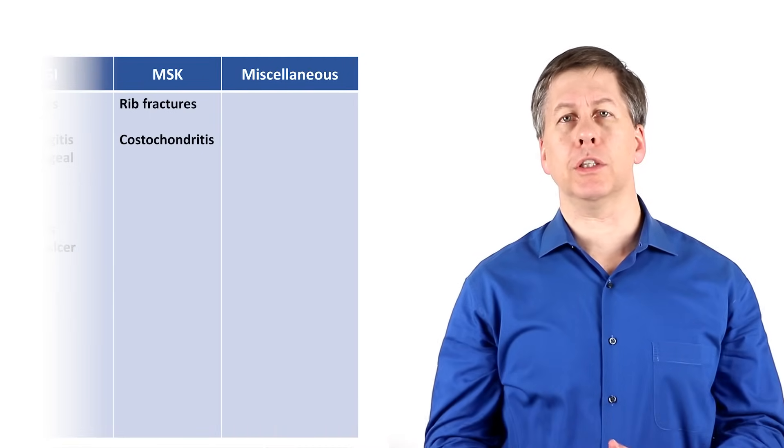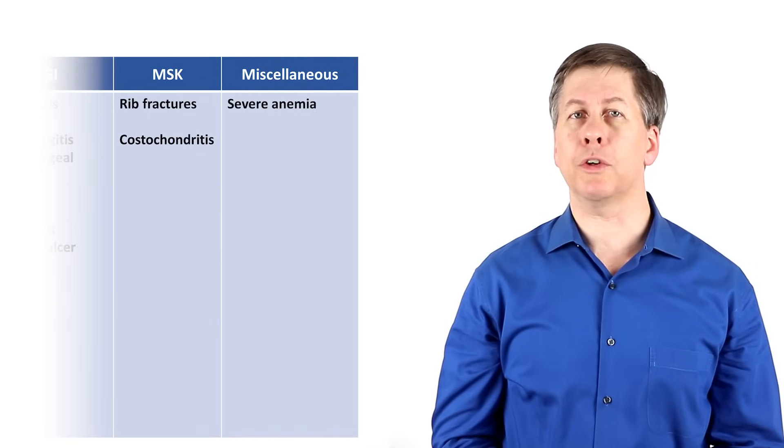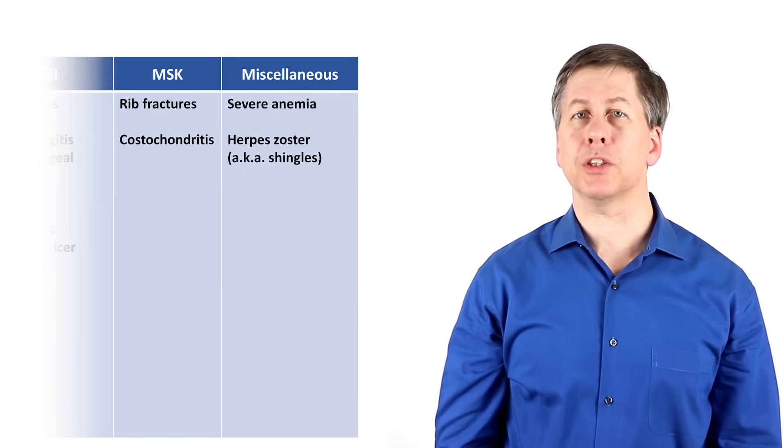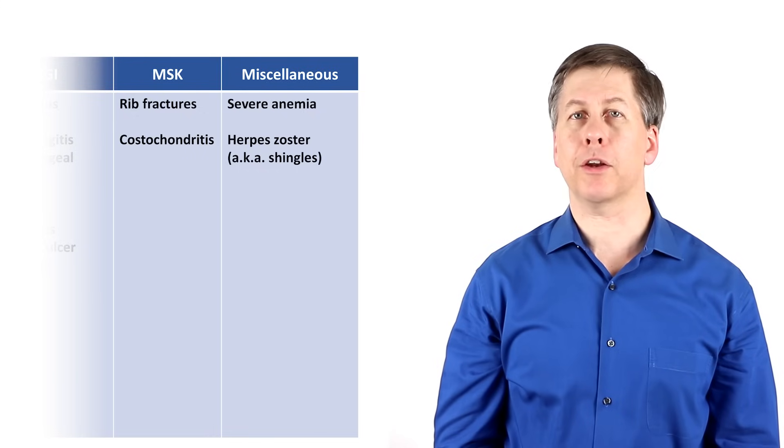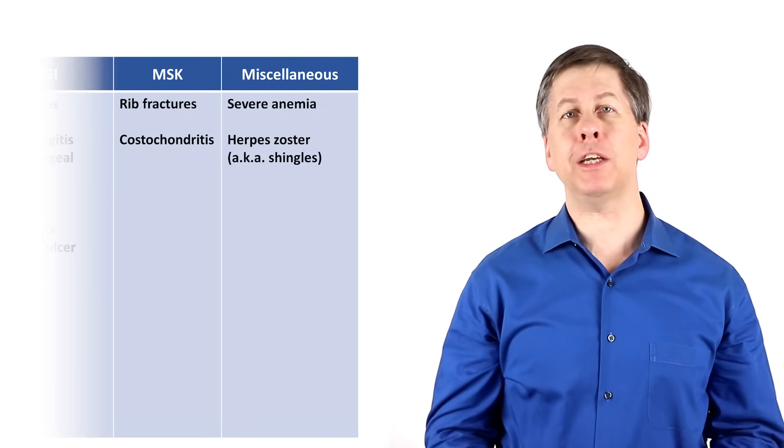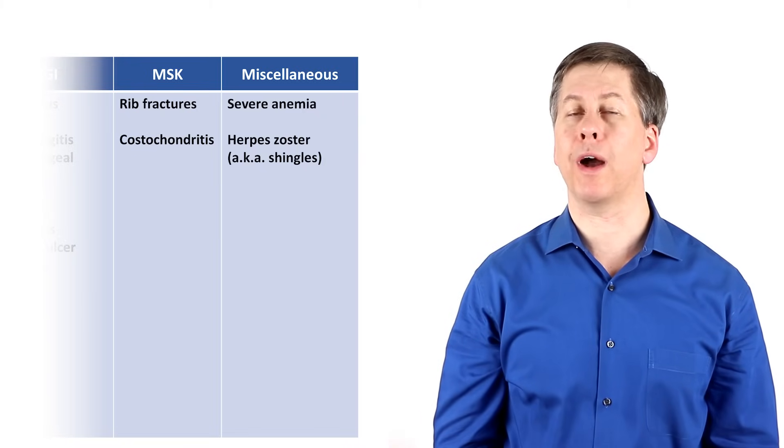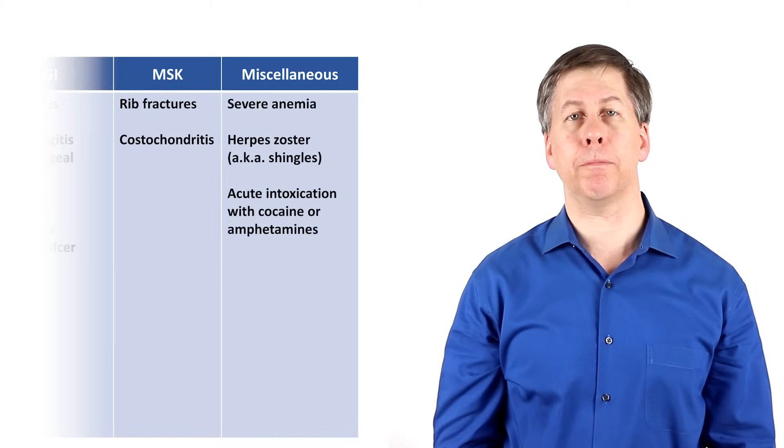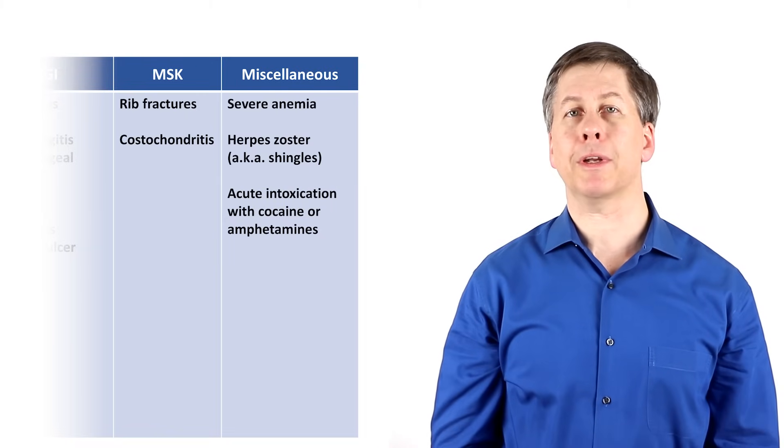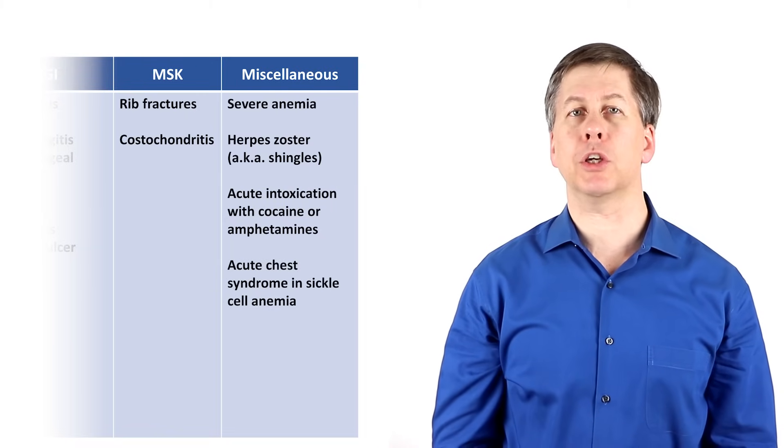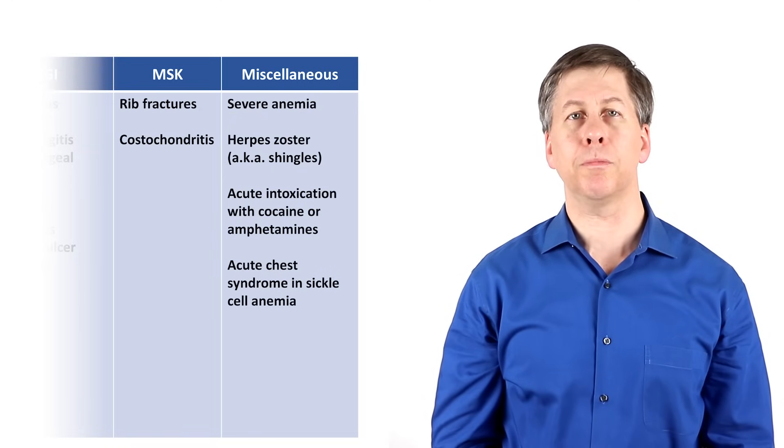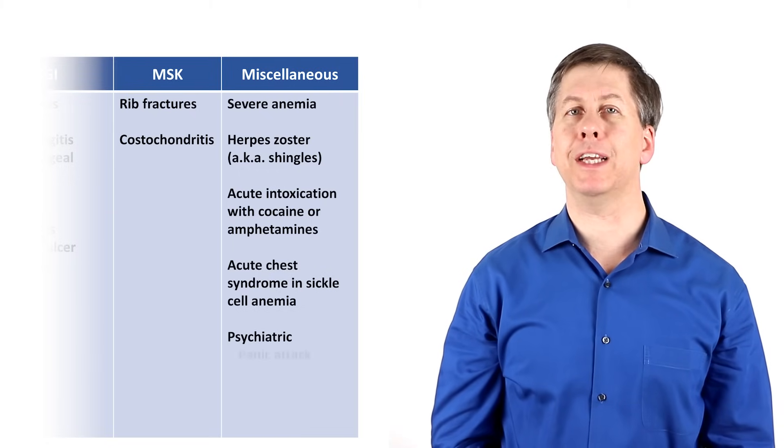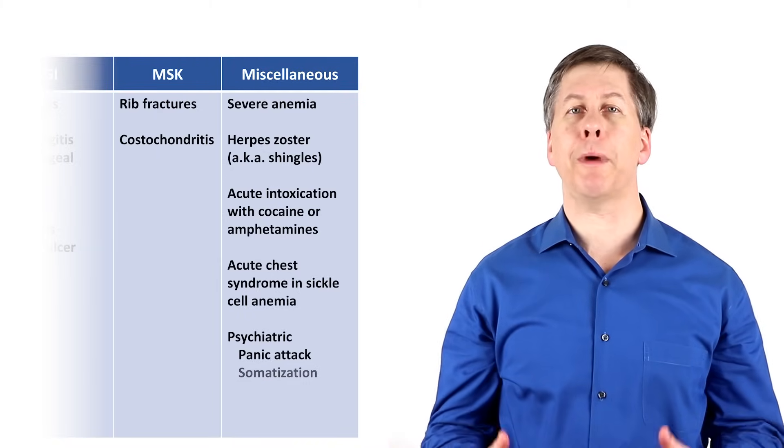There are a few remaining miscellaneous causes, including severe anemia, which reduces oxygen delivered to the myocardium, and herpes zoster, also known as shingles. Zoster has a vesicular rash isolated to a single dermatome that accompanies the pain. However, in a minority of patients, the onset of pain may precede the rash by a few hours to a few days. Acute intoxication of cocaine or amphetamines can cause chest pain. Sickle cell anemia can cause a complication called acute chest syndrome, in which there is acute vasoocclusion in the pulmonary microvasculature. And finally, some patients will have psychogenic chest pain as either a manifestation of panic attacks or a manifestation of somatization.